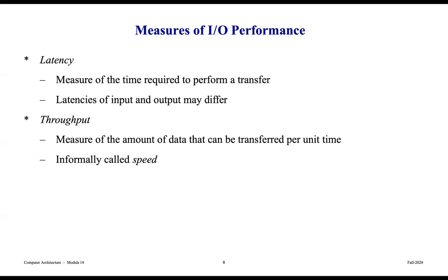What are some important measures of I/O performance? The first is latency — a measure of the time required to perform a transfer. Latencies for input and output may differ, similar to read and write cycles in memory, which are sometimes not the same. Another factor is throughput, which measures the amount of data that can be transferred per unit time. Informally it's called speed. For example, USB standards 1.0, 2.0, 3.0, 3.1, and USB-C each specify a transfer rate speed, which is an important factor.